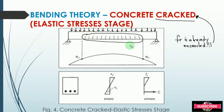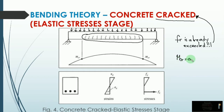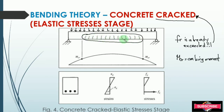The cracks begin to form at the bottom of the flexural member where the tensile stress is located. When the tensile stress at the bottom of the beam equals the modulus of rupture, this is called the cracking moment. At this point, cracks begin to form.